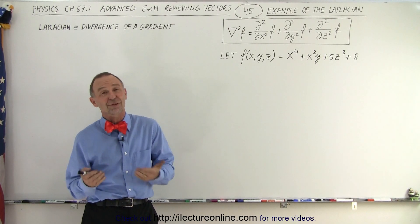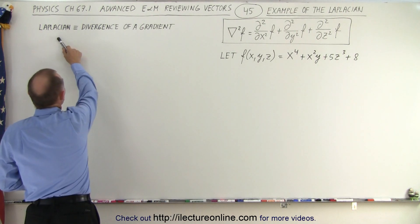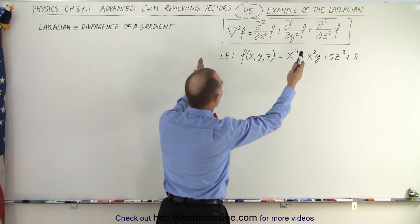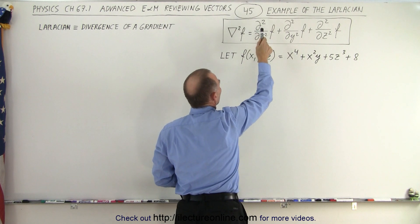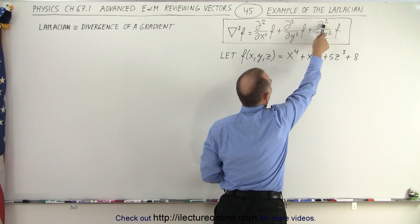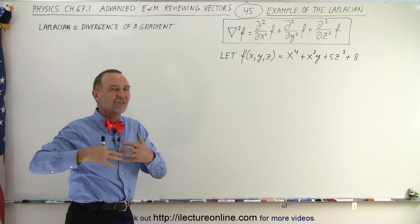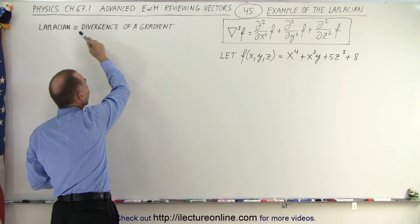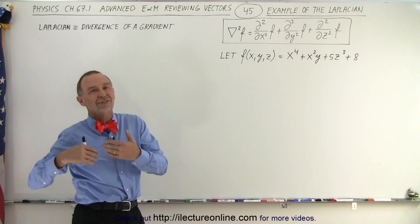Welcome to ElectronLine. On the previous video we saw what the Laplacian was. Essentially it's defined as follows: the Laplacian is equal to the divergence of a gradient. The equation shows us that the Laplacian of a scalar function is equal to the sum of the second partial derivatives with respect to x, y, and z of the function. Notice that the gradient operates on a scalar quantity, giving us a vector, and then the divergence of that vector gives us back a scalar — so the Laplacian of a scalar quantity yields a scalar result.